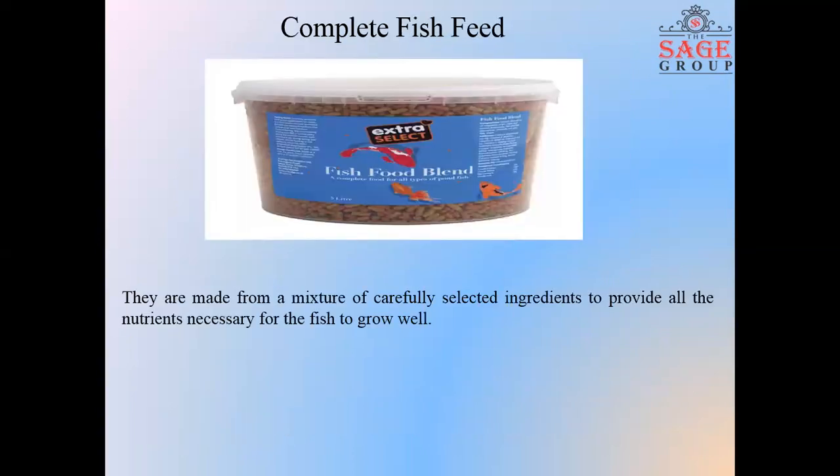Complete fish diet. Complete diets are made from a mixture of carefully selected ingredients to provide all the nutrients necessary for the fish to grow well, in a form that fish find easy to eat and digest. A complete diet supplies all ingredients including protein 18 to 50%, lipid 10 to 25%, carbohydrate 15 to 20%, ash less than 8.5%, phosphorus 1.5%, moisture 10%, and trace elements like vitamins and minerals necessary for optimum growth and health of fishes.